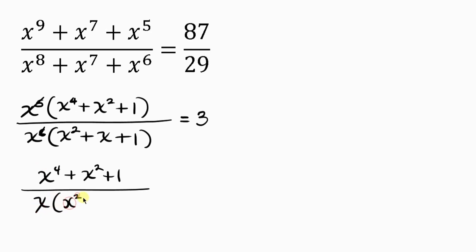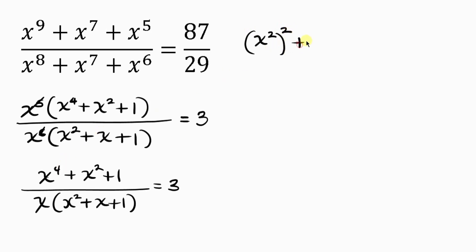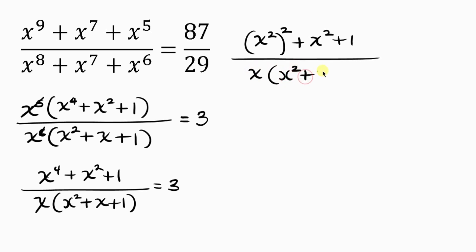We have x times x to the power of 2 plus x plus 1, equal to 3. Now I'm going to simplify the numerator so that it has x to the power of 2. That means x to the power of 4 can be written as x squared raised to the power of 2, because 2 times 2 gives 4. So the numerator becomes x squared raised to the power of 2, plus x squared plus 1.